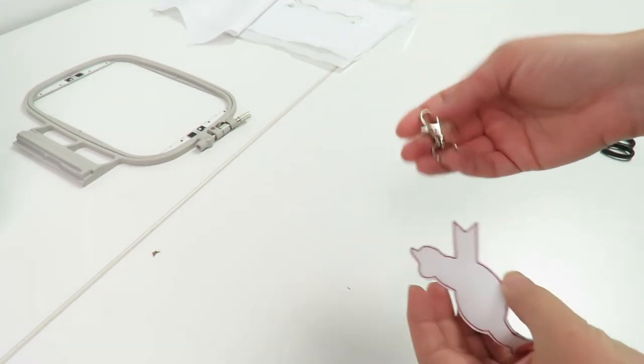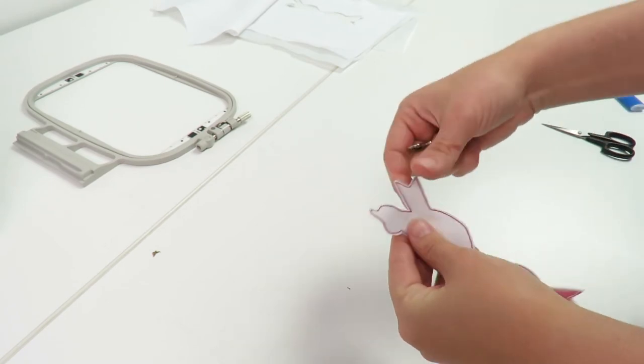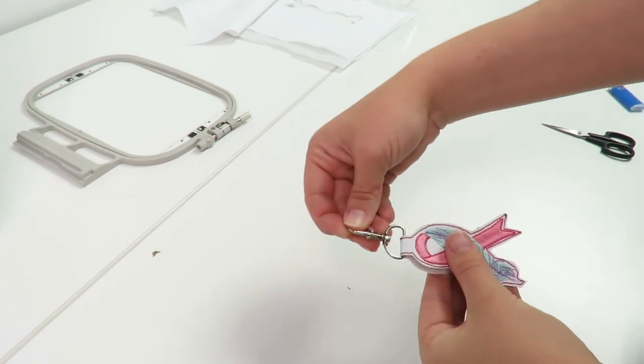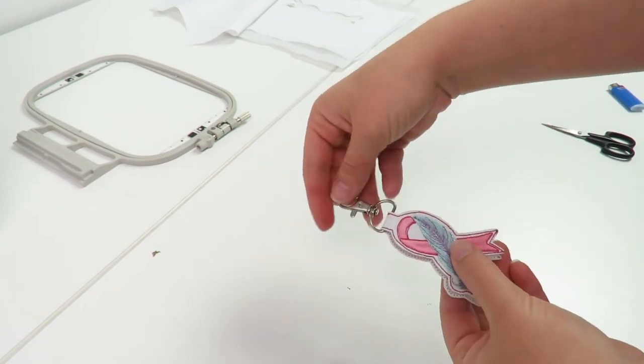Use a D-ring keychain and thread it through the one end of the embroidery keychain fob. Fold the embroidered keychain fob in half and reveal your keychain.